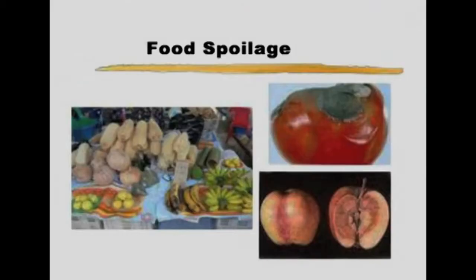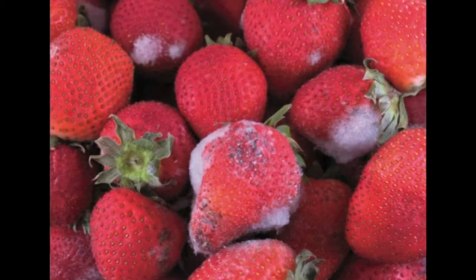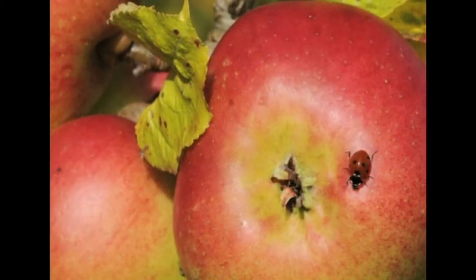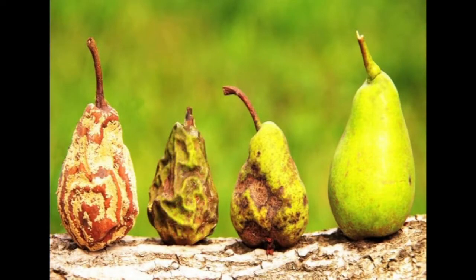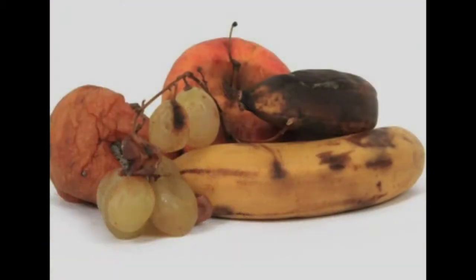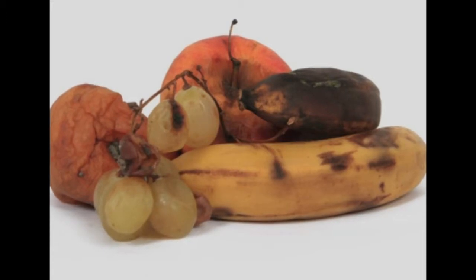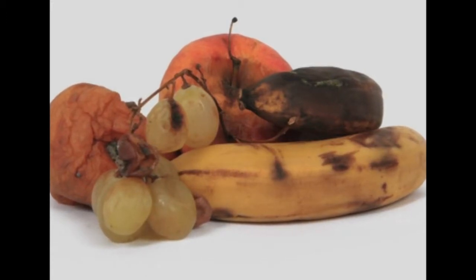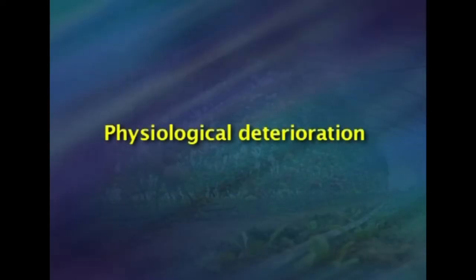Another external factor is parasitic diseases: the invasion of fruits and vegetables by fungi, bacteria, insects, and other organisms is a major cause of post-harvest losses. Microorganisms readily attack fresh produce and spread rapidly owing to the lack of natural defense mechanisms in the tissues and the abundance of nutrients and moisture which supports their growth.